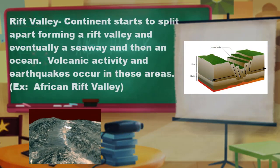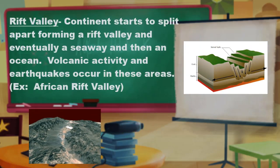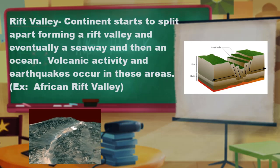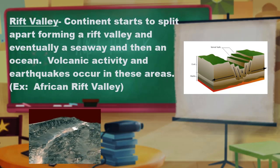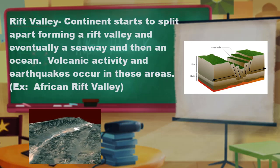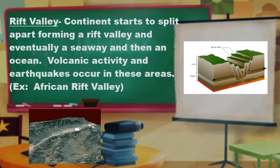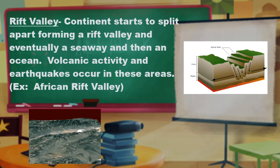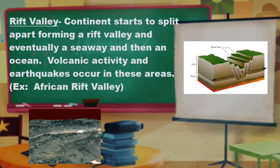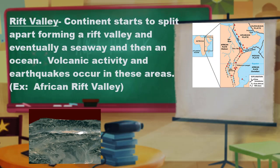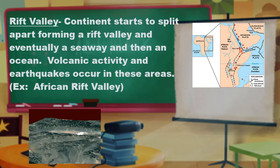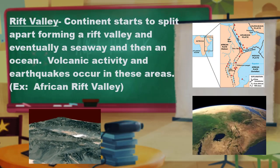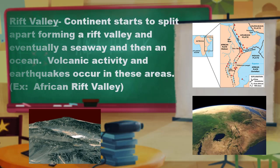Rift valley: a continent starts to split apart, forming a rift valley, and eventually a seaway, and then an ocean. Volcanic activity and earthquakes occur in this area. An example of a rift valley is the African Rift Valley.